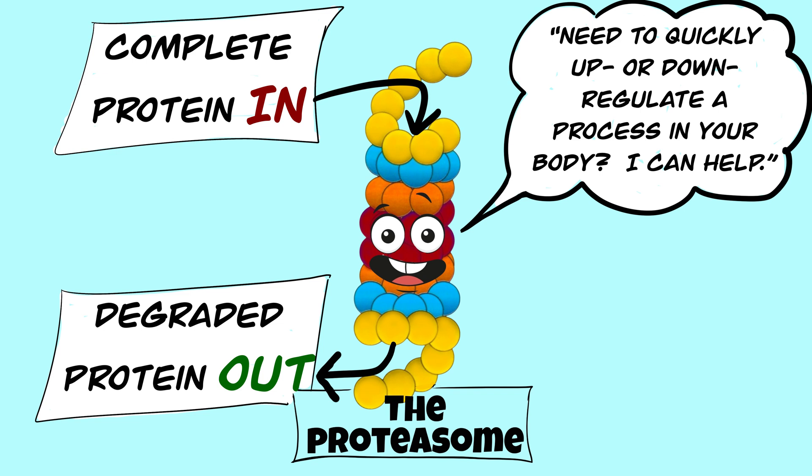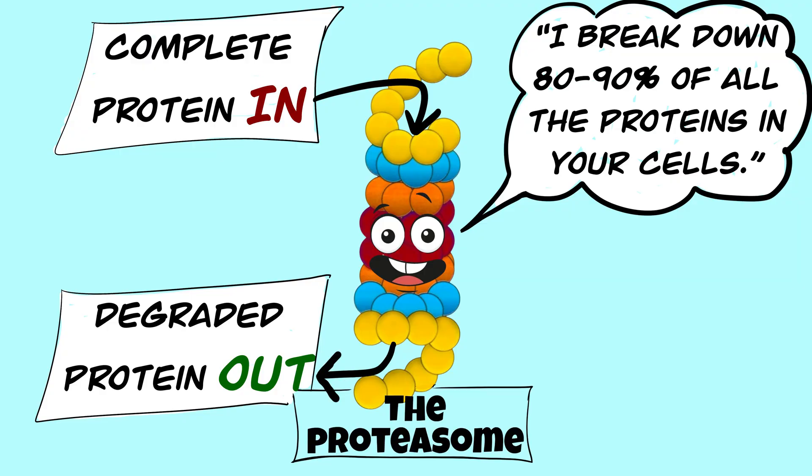The proteasome is responsible for degrading proteins quickly, allowing your body to rapidly up or down regulate cellular processes by increasing quantities of specific proteins. About 80 to 90% of all proteins, typically short-lived, are broken down this way. Proteasomes are mostly found in the cytoplasm, but they can be found in the nucleus of the cell.